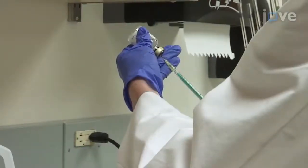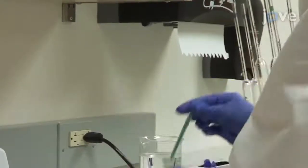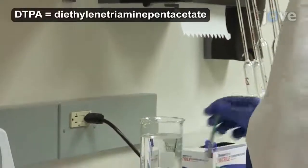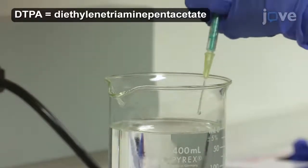Using a clean syringe, measure 0.24 milliliters of the gadolinium DTPA contrast agent. Add it to the beaker using the same technique.